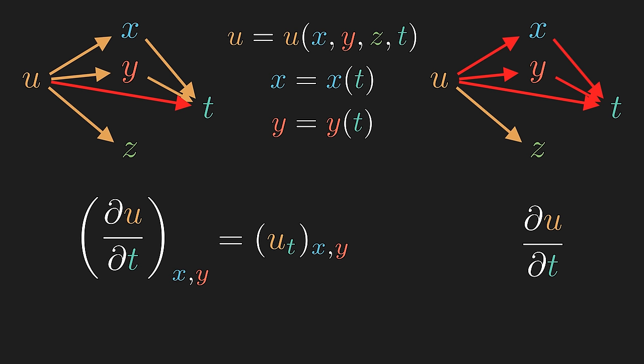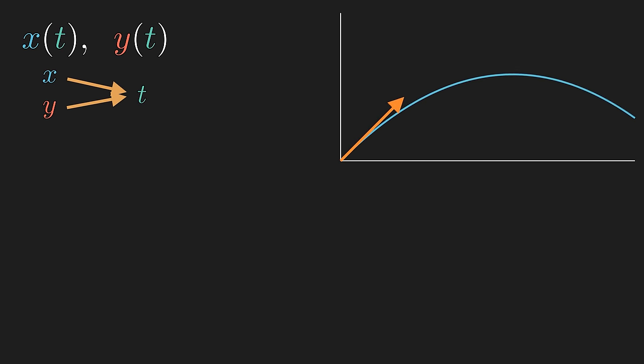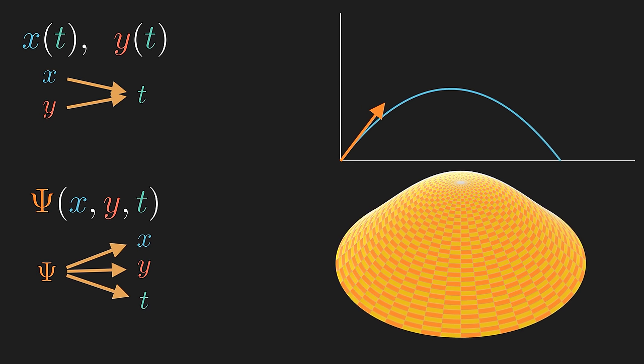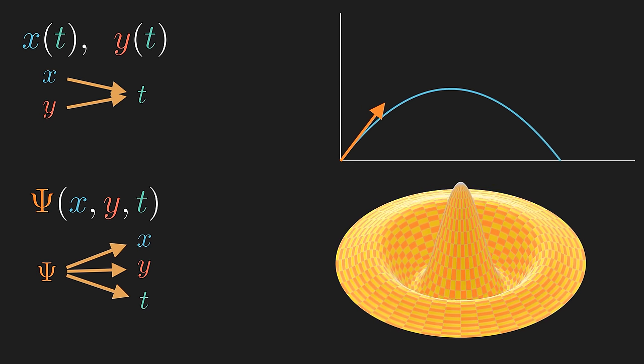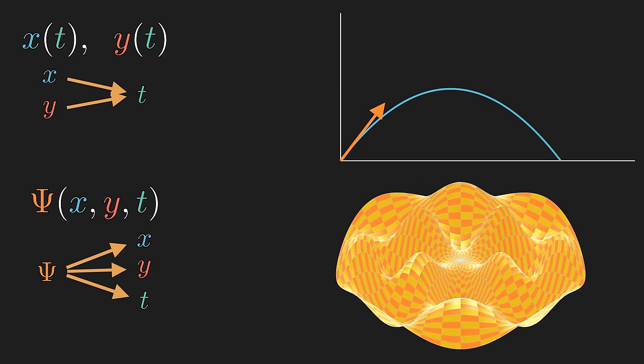In some branches of physics, things are better described as functions. For example, two-dimensional kinematics is best described with x and y each written as a function of t. And the wave function of a particle on a disk, jumping through different quantum eigenstates, is best described as a function of two-spatial dimension and one time dimension.